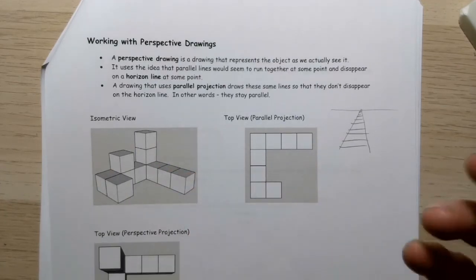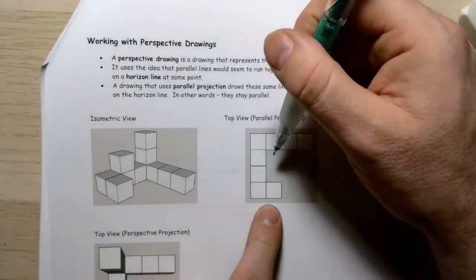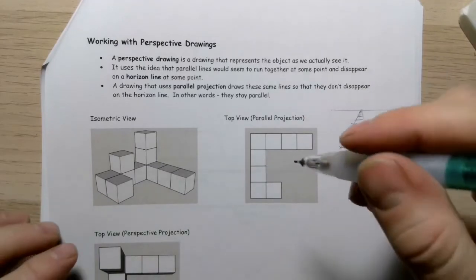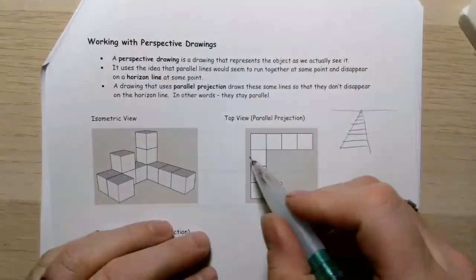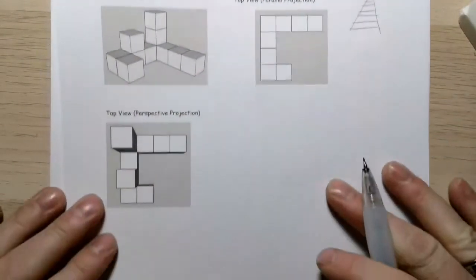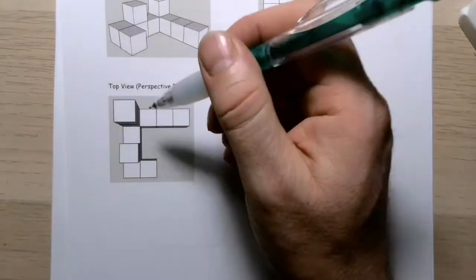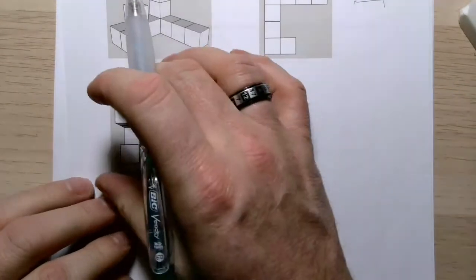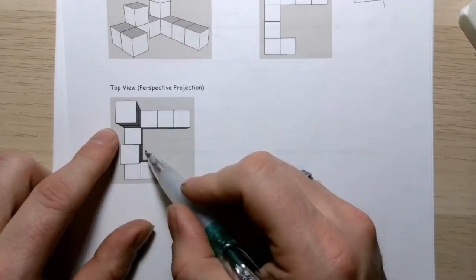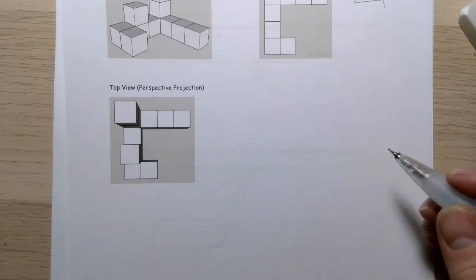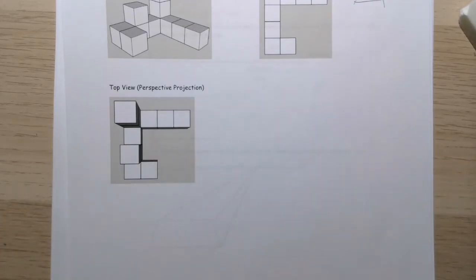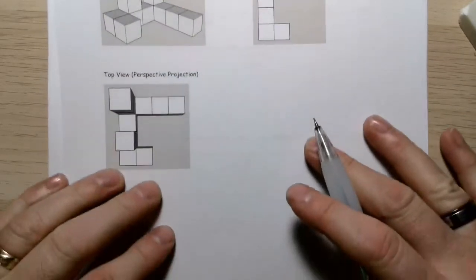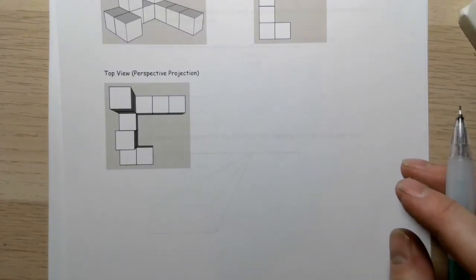Here's an isometric view of a shape composed of cubes. In a parallel projection, all parallel lines stay parallel — exactly as the math suggests. But in a perspective drawing, those parallel lines — particularly the ones that aren't horizontal or vertical — all meet at a specific point on the horizon line. This is used a lot in art to give an element of realism, and it's also very helpful in construction.